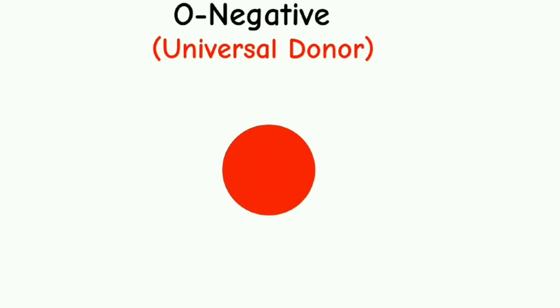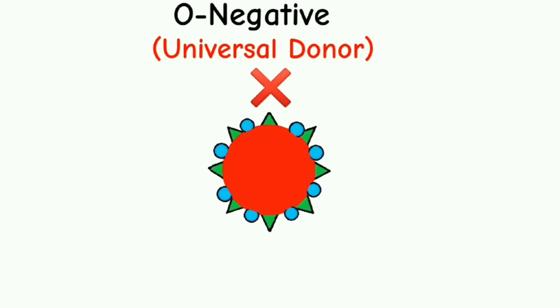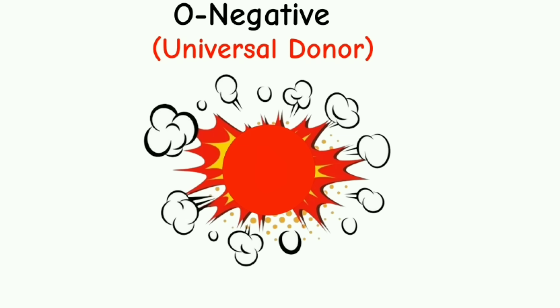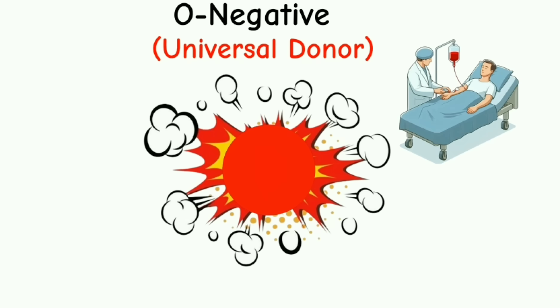You know why? O negative blood is missing all the antigens A, B, and RH factor. This means that it's missing those things that could cause a bad reaction during a blood transfusion.